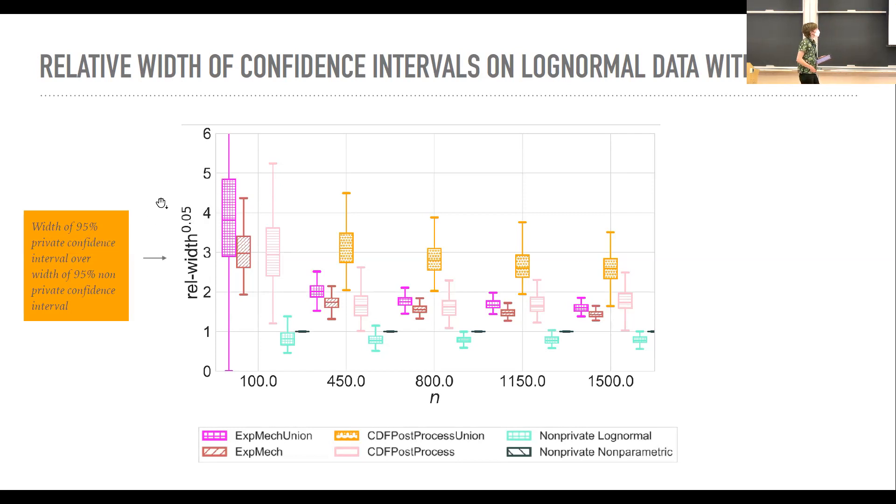So the first thing we did is we looked at the relative width of the non-private and private confidence interval. So this is the 95% confidence interval, its width divided by the private one. And you can see a couple of things. So first of all, as a general rule here in sort of this reddish maroon color, this is the exponential mechanism using a careful analysis. And it generally does better than anything else over most regimes that we looked at. There are a couple where the CDF method does better, which I won't go into. And then in pink, you have the CDF method. So the main takeaway is that the exponential mechanism does best. The CDF method doesn't do too badly, though, that being said.